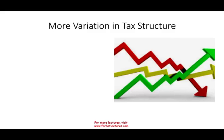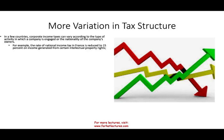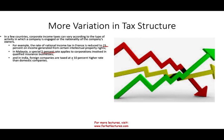In a few countries, corporate income tax rates can vary by type of business activity. For example, France reduces its national tax rate to 15% on income generated from certain intellectual property rights. In Malaysia, a special 5% rate applies to corporations involved in qualified insurance business. In India, foreign companies are taxed at 10% higher than domestic companies — unless you structure your business as an Indian business to pay the local rate.